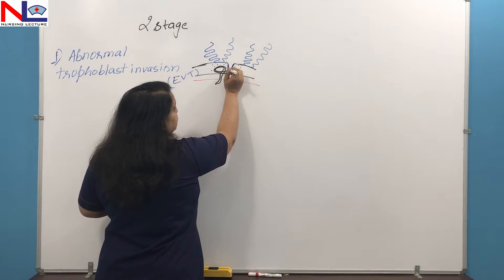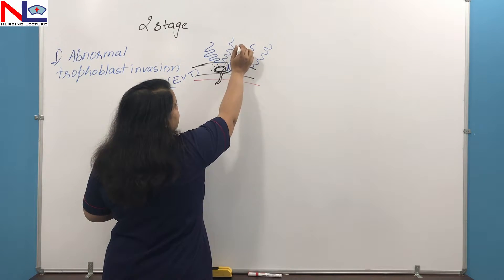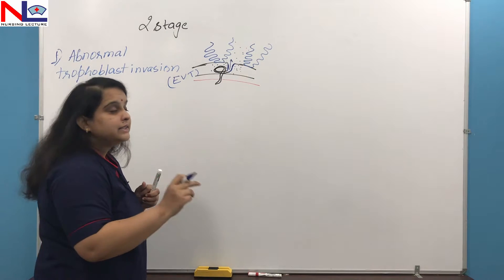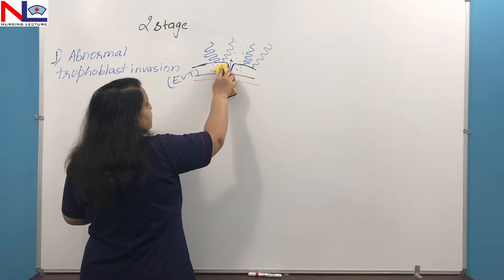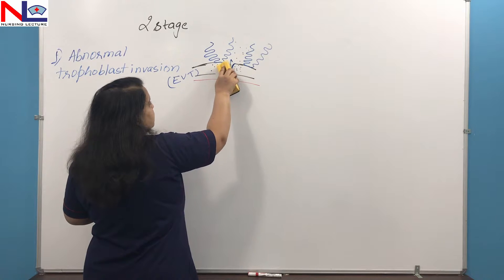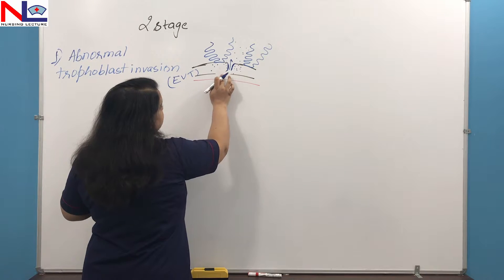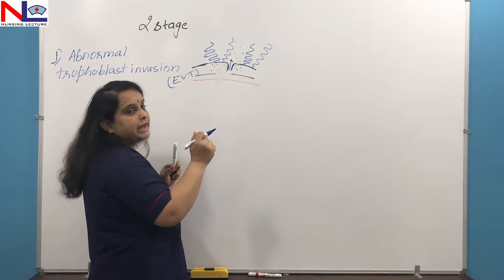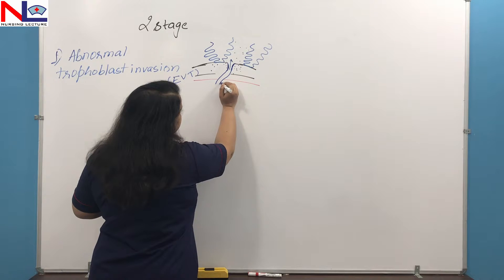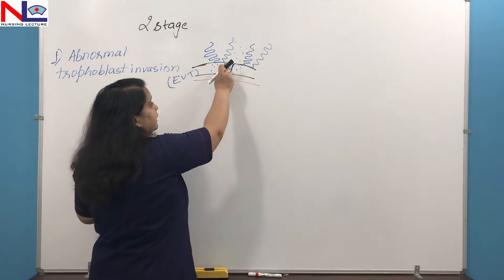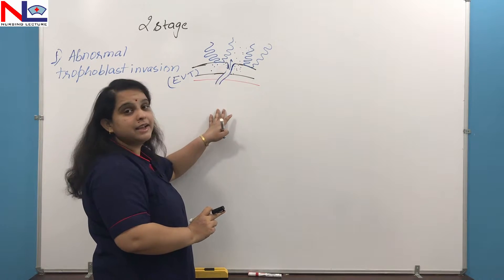Because of this remodeling, blood flows up into the intervillous space and perfuses these tissues. And in the second trimester, a second wave of trophoblastic cells again enters the endothelial and muscular lining of the spiral arterioles, making the vessels more dilated for higher perfusion. So there is a remodeling of spiral arterioles during both first and second trimester in normal pregnancy.